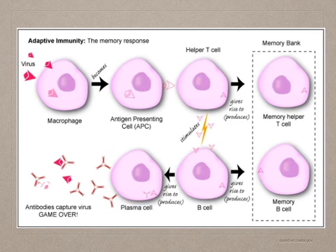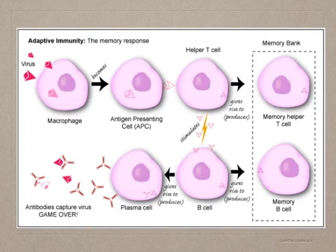When a macrophage engulfs a pathogen such as a virus, it becomes an antigen-presenting cell. A helper T cell recognizes this antigen-presenting cell and stimulates B cells to divide into plasma cells that secrete antibodies. Both B and T lymphocytes also divide to form memory cells that form the memory bank in case there's another infection by the same pathogen.